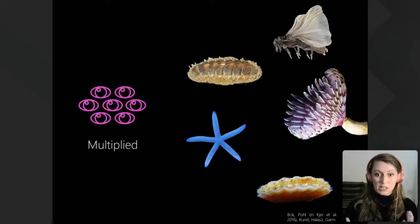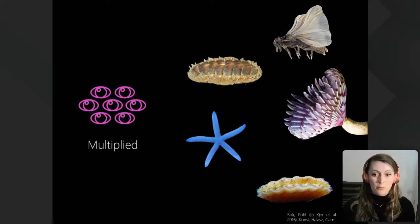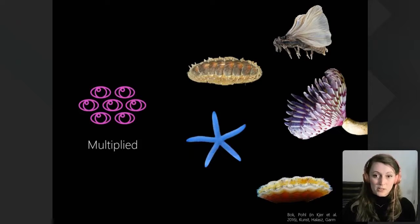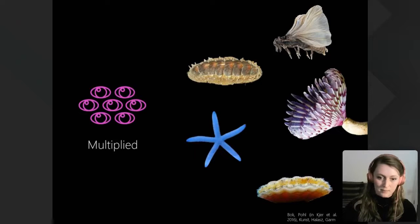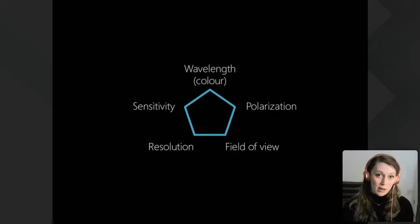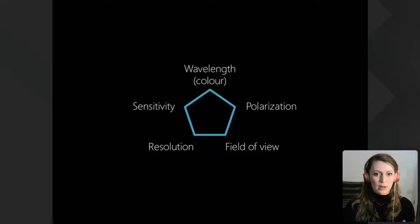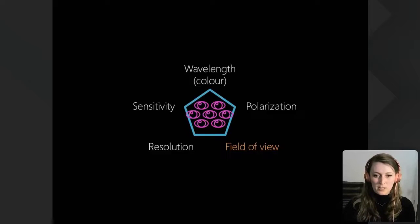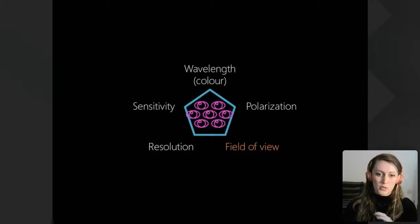Examples of multiplied visual systems include scallops and starfish, but also fan worms — at the bottom of every pink stripe on the fan there is a small pair of very simple eyes — and strepsiptera, which have miniature eyes in place of the compound eyes familiar in other insects. Since we know these systems have identical visual units with the same sensitivity and polarisation, the parameter that gives us the most information about why these animals are replicating the same eye over and over again is field of view.